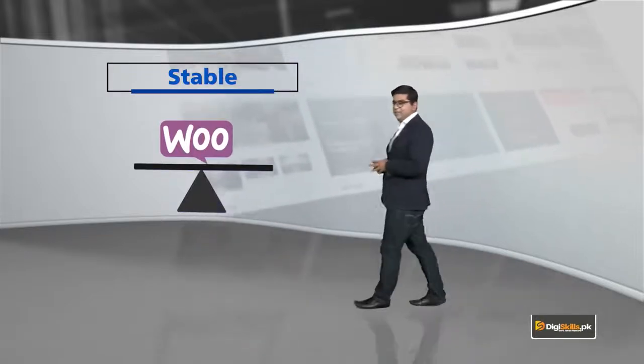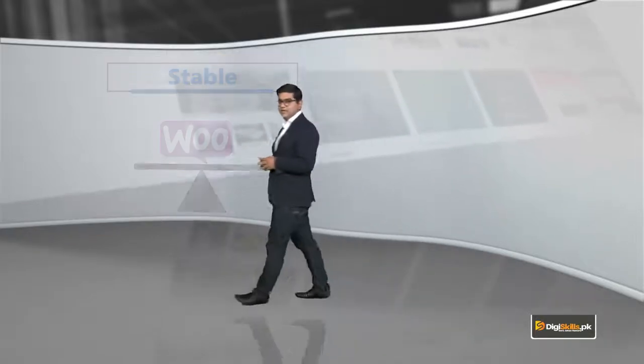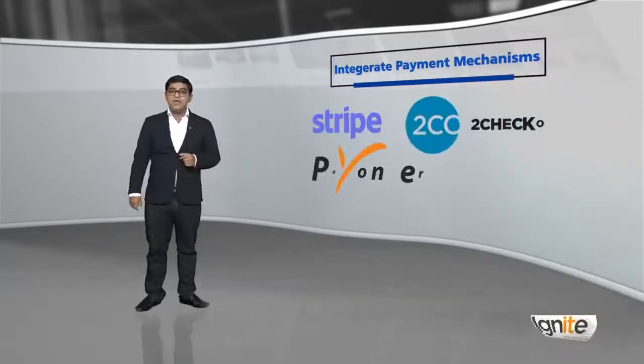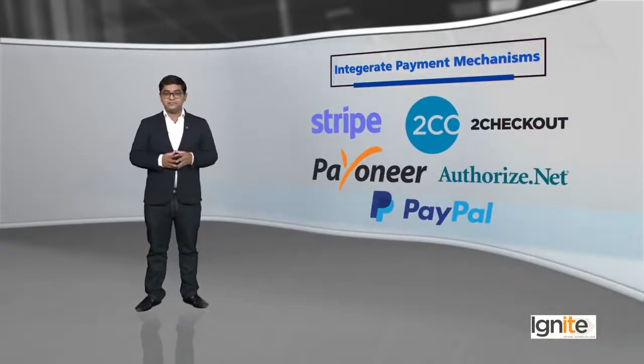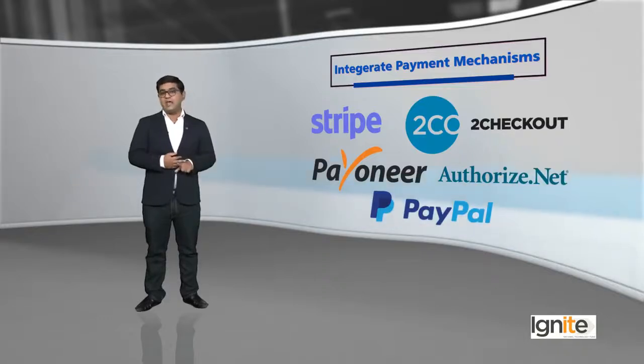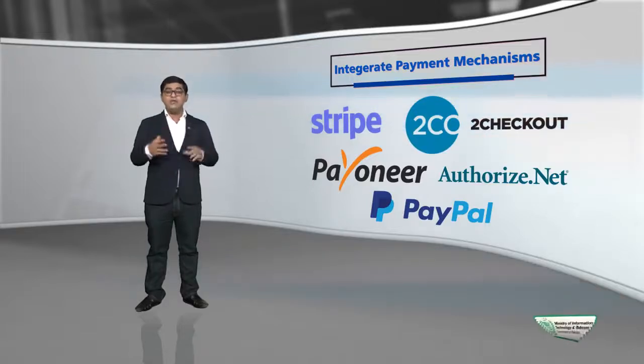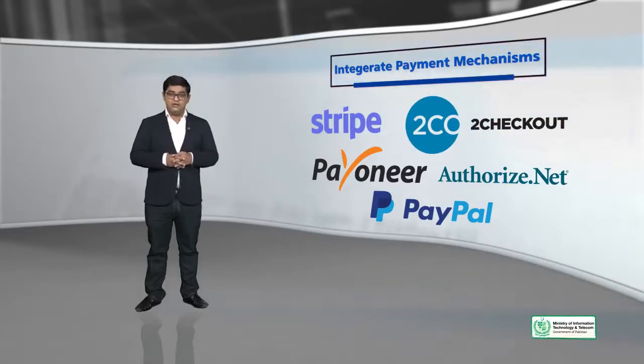What other features make WooCommerce really amazing? On WooCommerce, you can integrate different payment mechanisms. You can integrate Stripe, Checkout, Payneer, Authorize.net, and PayPal as well. These are just some of the features of WooCommerce, but there is more information and more knowledge that is coming.